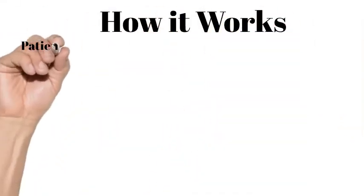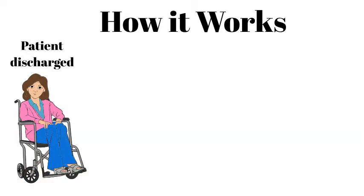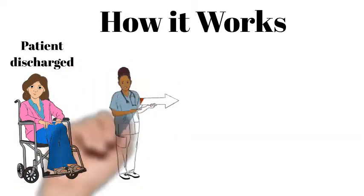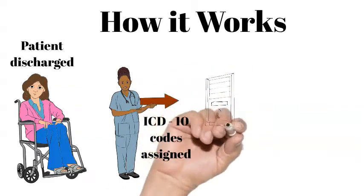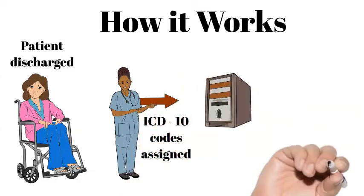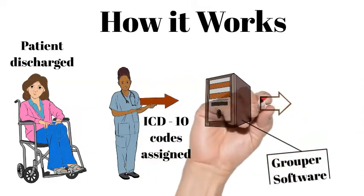When a patient is discharged from a hospital, they are assigned ICD diagnosis codes and procedure codes for their stay. ICD is an abbreviation for International Classification of Diseases. For each in-hospital discharge, only one of about 765 MSDRGs are assigned, based on the usually many ICD diagnosis and procedure codes recorded in a patient's medical record. Computer software, referred to as a grouper, does this task.